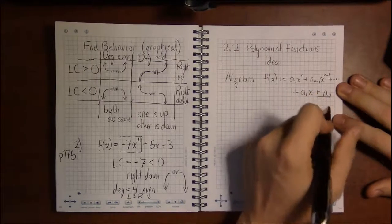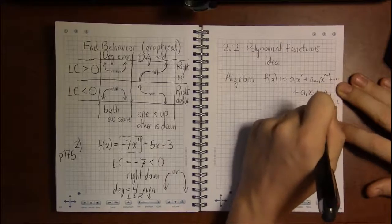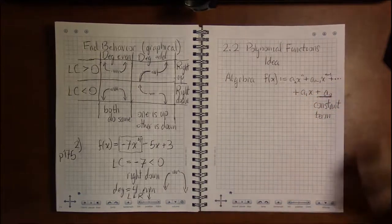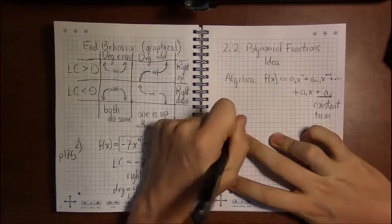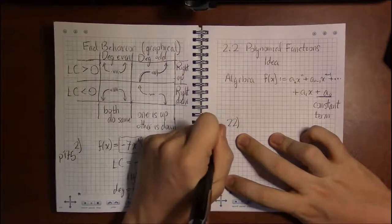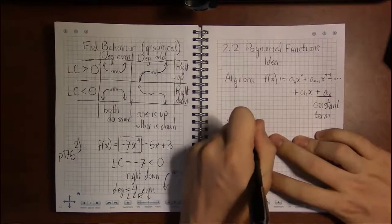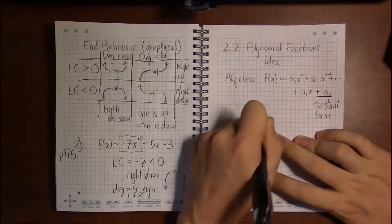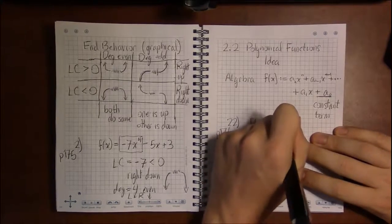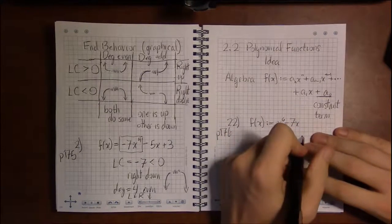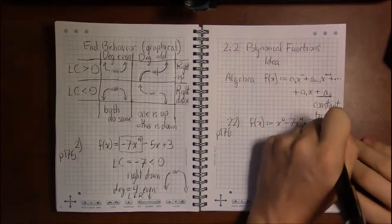So for example, if we look at problem 22 on page 176 of this section, problem 22 has us look at a polynomial defined as x to the sixth minus 7x to the fourth plus 7x squared plus 15.